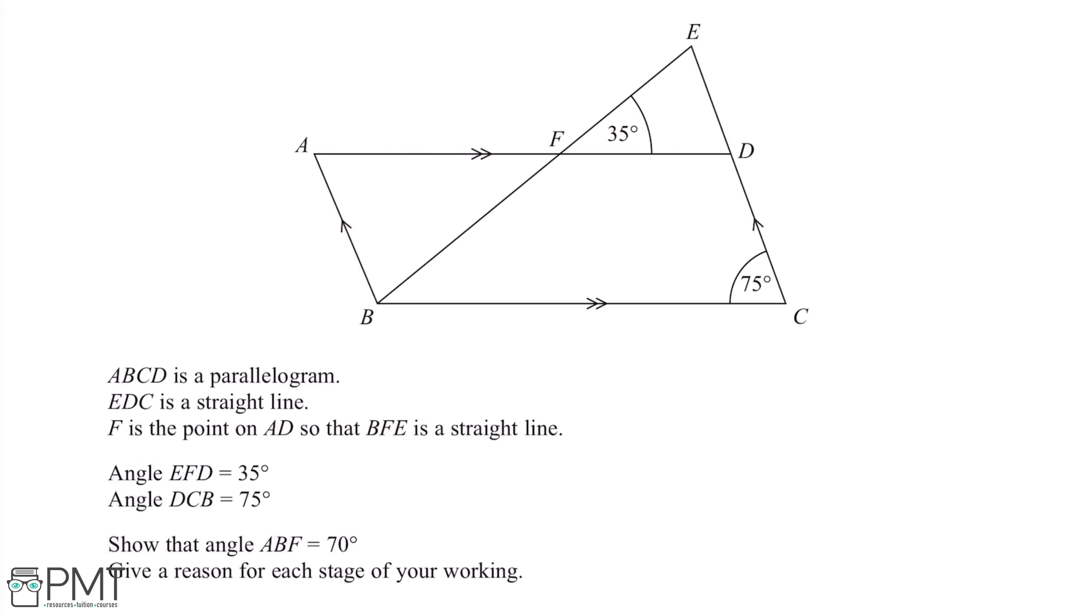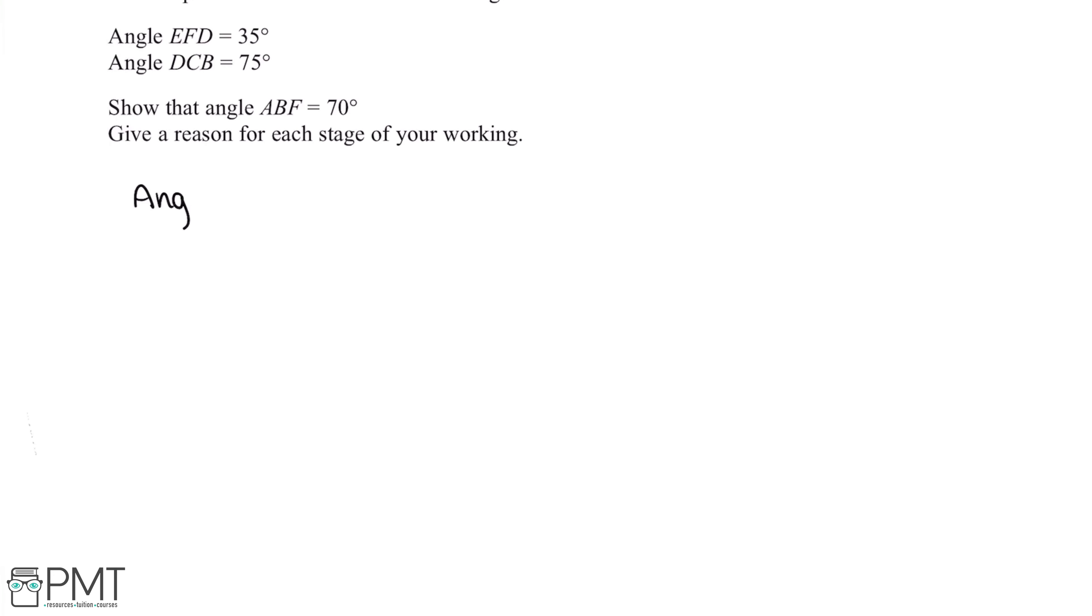The first thing we can start off with is this parallelogram ABCD, which is this one here. Now, opposite angles in a parallelogram are equal. So this means that angle BAD, which is this angle here, is also 75 degrees. So we can write this down here: angle BAD is 75 degrees because opposite angles in a parallelogram are equal.